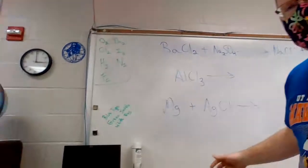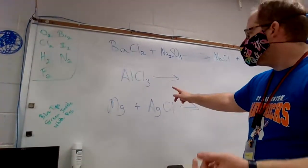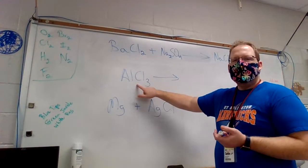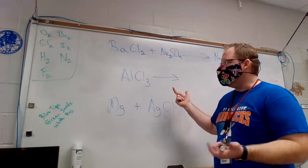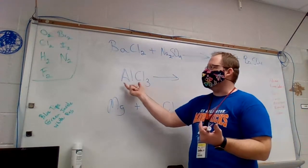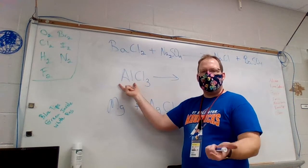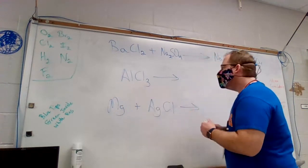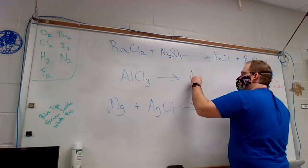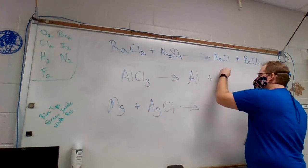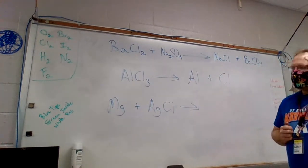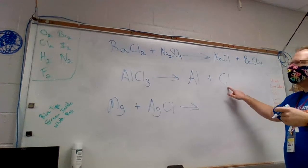Decomposition is the only reaction with a single chemical, and what happens is that chemical breaks down into two separate chemicals. So with AlCl3 being only one chemical, I know it's breaking down into its separate parts — aluminum and chlorine. So it's going to break down into aluminum plus chlorine Cl.